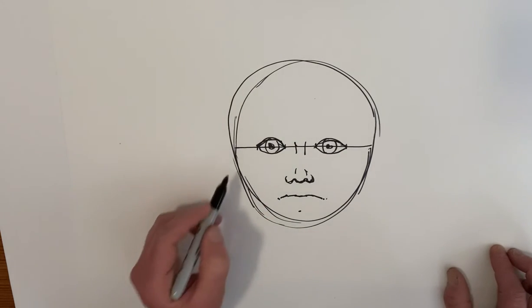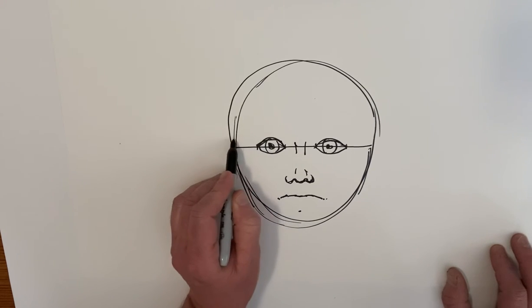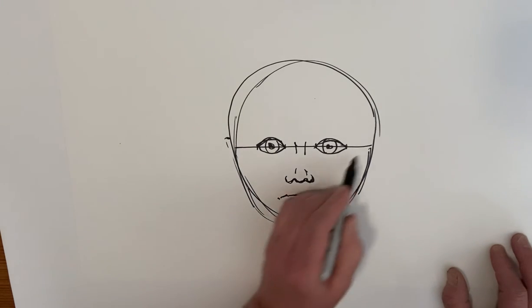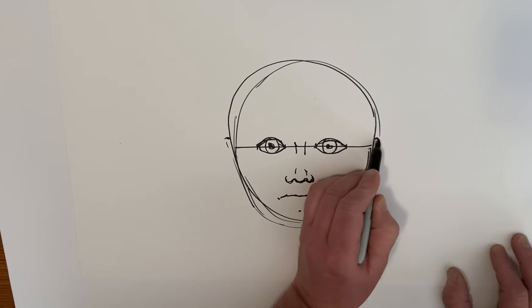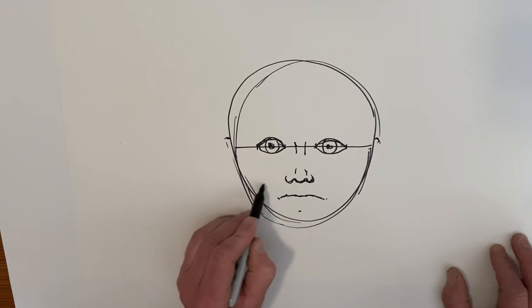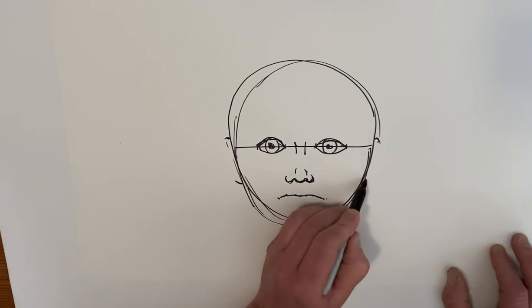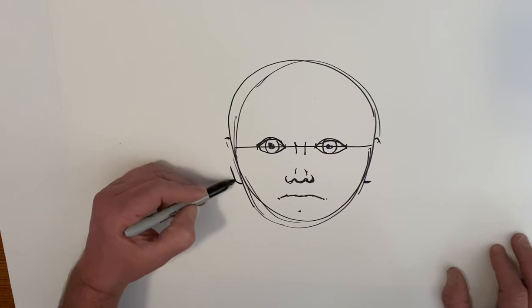The ears. If you drew a line straight across from the top of the eye, that's where the top of the ear should go. And if you drew a line straight across from the bottom of the nose, that's where the bottom of the ear should go.